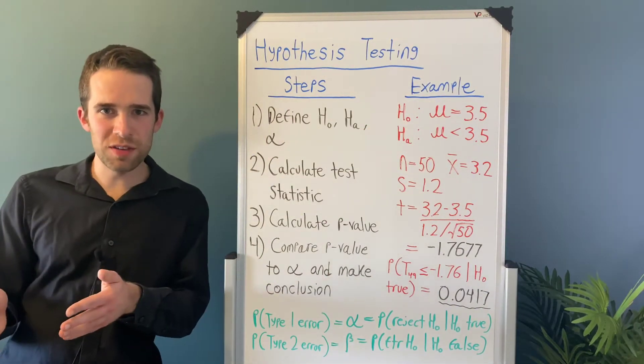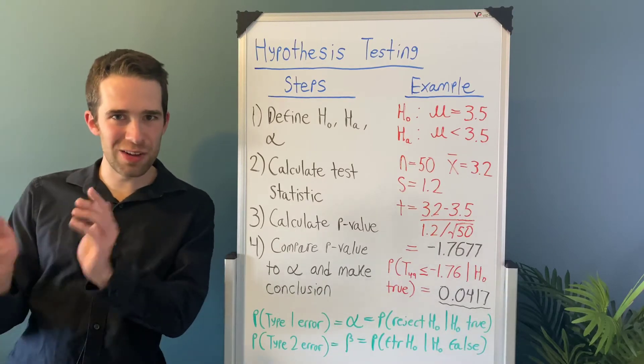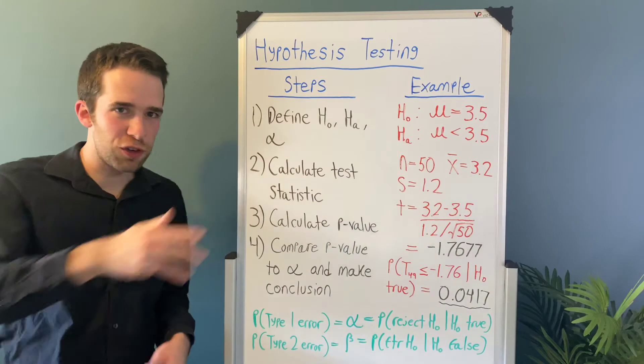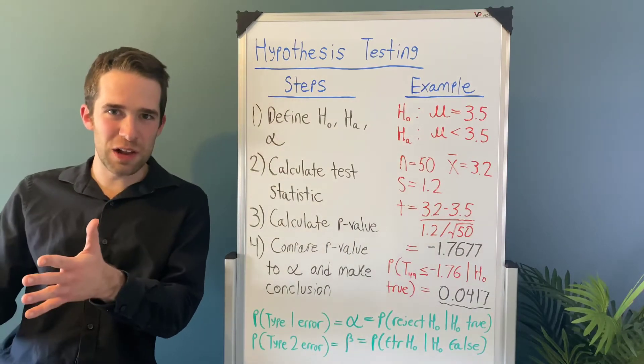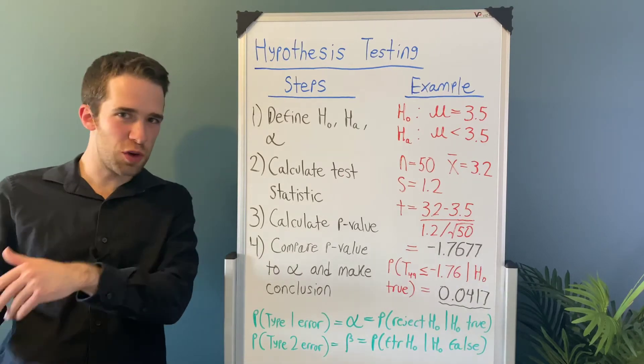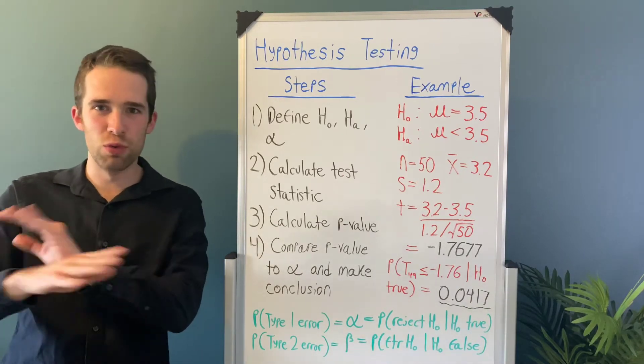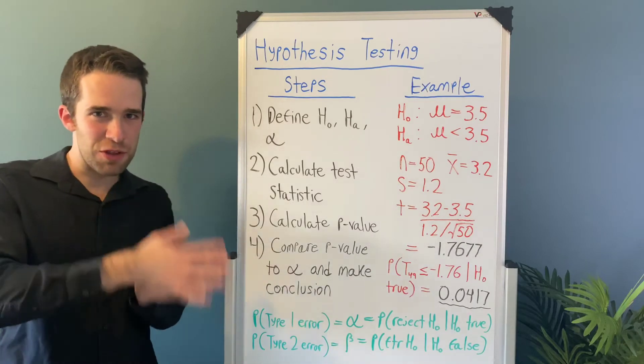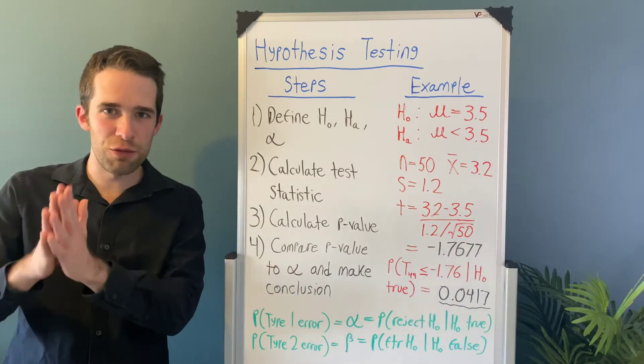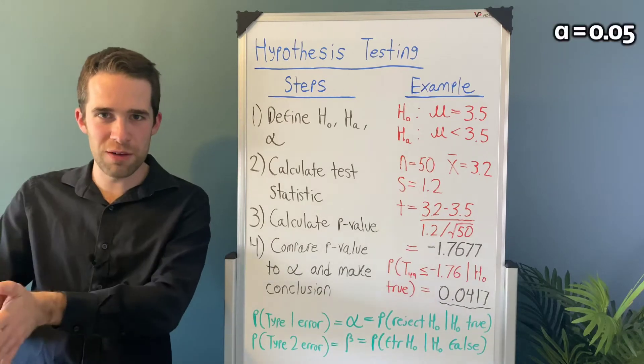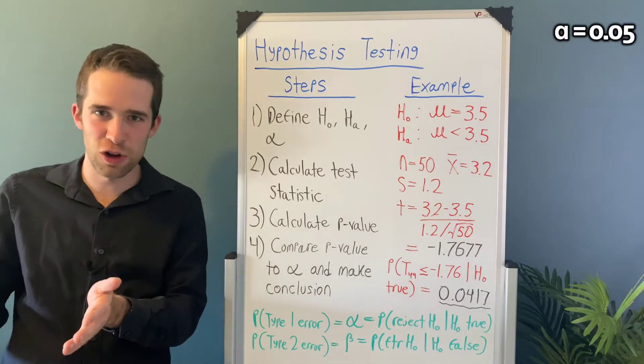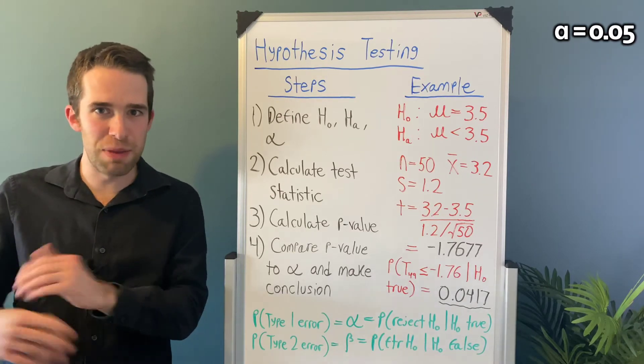The null hypothesis is just the opposite of whatever the alternative hypothesis is. So here we can write μ = 3.5, although technically the opposite is μ ≥ 3.5. So you can write either one of those down, it really doesn't matter. We have the null and the alternative hypotheses written down. We're going to use alpha equals 0.05 for our significance level, just because 0.05 is conventional and it's standard, and then bam, we're done.